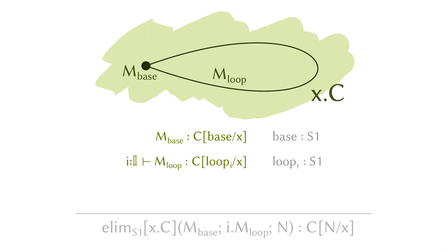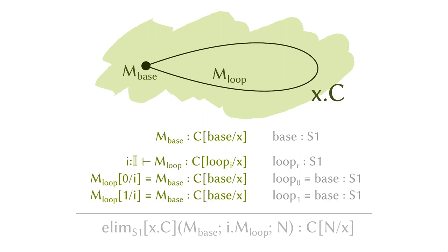The next one is a loop. You want a proof for the loop case, matching up with the loop constructor in the circle. You have two additional judgmental equalities making sure that the endpoints of your proof of the loop case match the m-base. This is because we put two constraints on the loop constructor: its zero and one endpoints must be base. So the two premises in the elimination rule just reflect the constraints on the loop constructors.